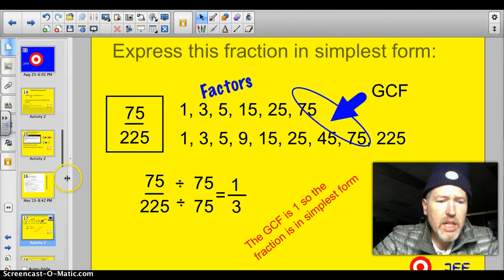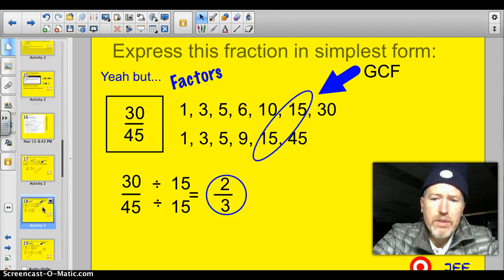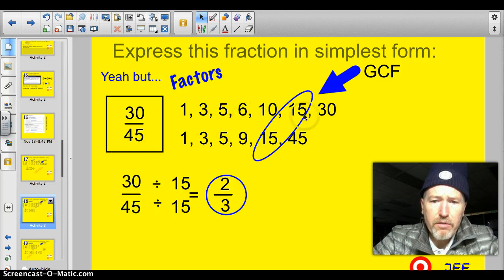So, let's take a look at another example. 30/45. Well, on this one here, I factored them all out. And I found out that 15 was the greatest common factor. So, 30 divided by 15 is 2. 45 divided by 15 is 3.